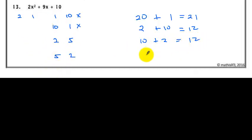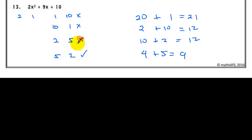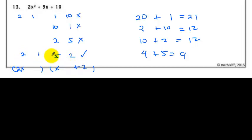Now let's try (2, 1) with (5, 2): 2 times 2 is 4, 1 times 5 is 5, and the sum is 9. This is the correct combination. So with 2 and 1, place x in each binomial, bring down the 2 and the positive 2. The values cross: 1 goes here and 5 goes here — positive 5. So the factors are (2x + 5)(x + 2).